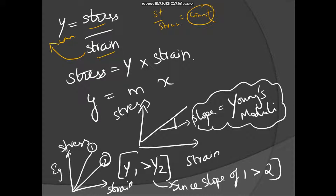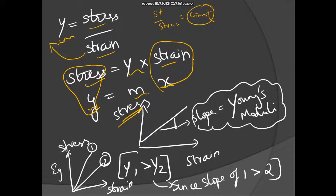Rearranging, stress is equal to Y into strain. Comparing this with the equation Y = M × X: along the Y-axis we take stress, along the X-axis we take strain, and the slope of the graph is Young's modulus.